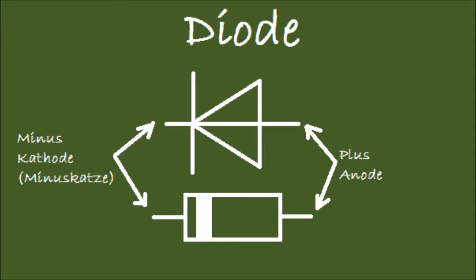There is also another thing which may confuse you, this plus, minus, anode, cathode. So the plus and minus poles are called cathodes and anodes. Cathode and anode.